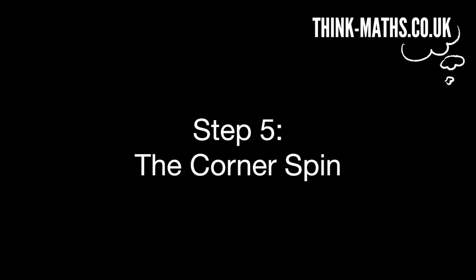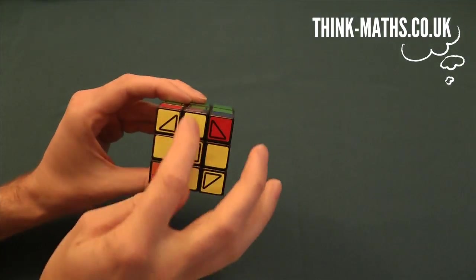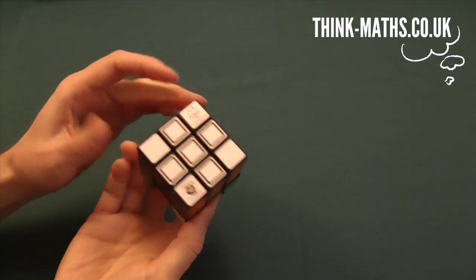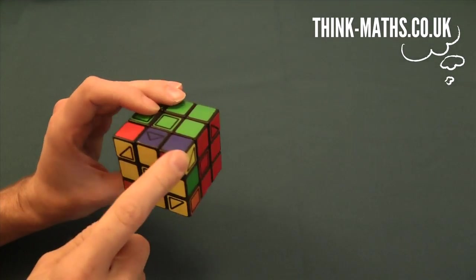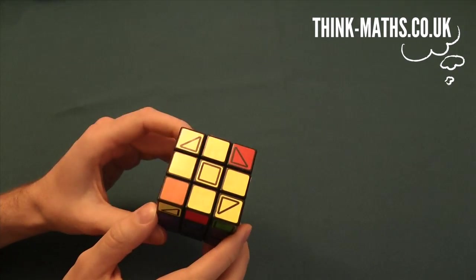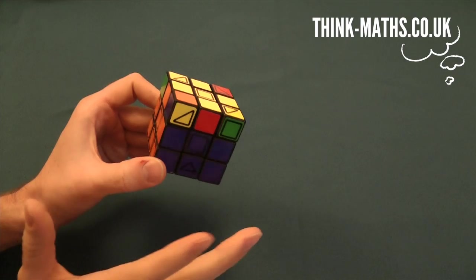Step five, the corner spin. Okay, so you've now got the yellow cross on this face, everything else is still fine. Your next step is to get these corner pieces in the right places. And so we're going to ignore the orientation at the moment.